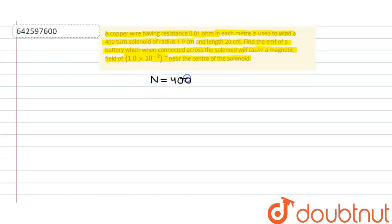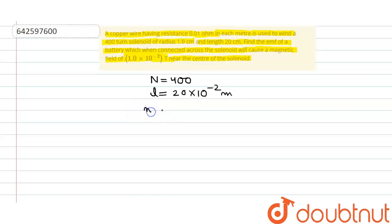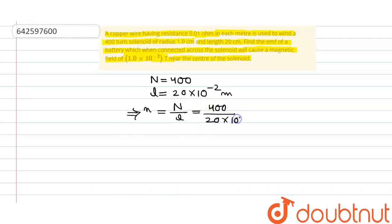What is given to us: there are 400 turns in a 20 centimeter length of the solenoid, which we can write as 20 × 10⁻² meters. Now we want to find the number density — the number of turns per unit length — represented by small n, which equals N divided by L: 400 divided by 20 × 10⁻² meters.